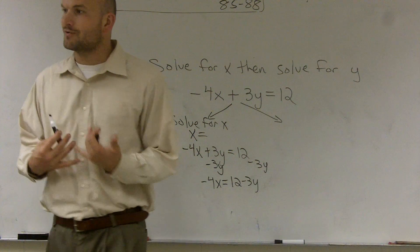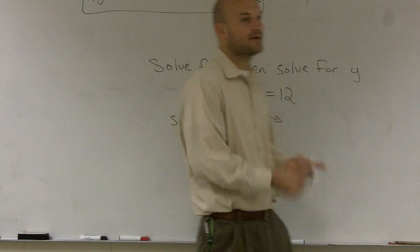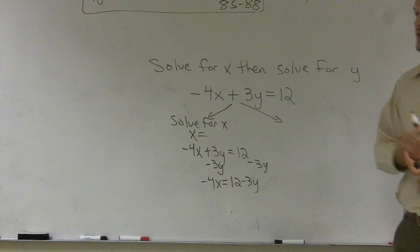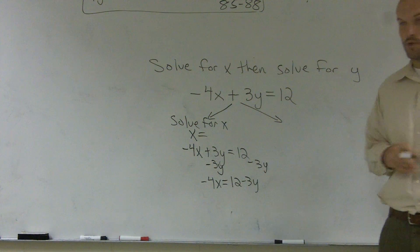You cannot combine 12 minus 3y to get 9y or to get the number 9. Y represents a number that we don't know. So you cannot combine them together. So just leave it as 12 minus 4y.